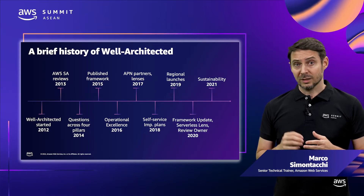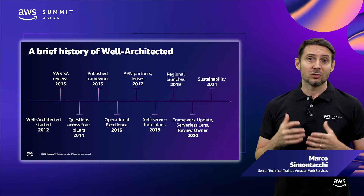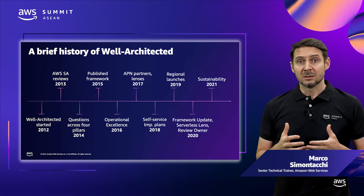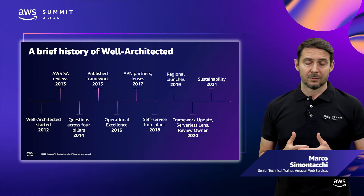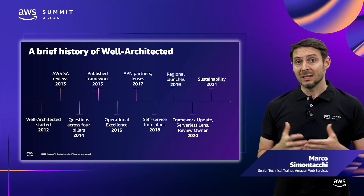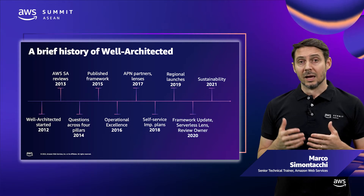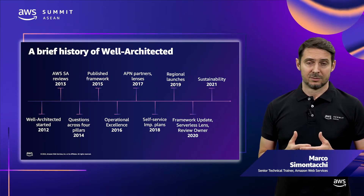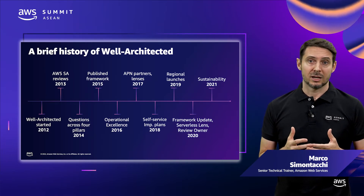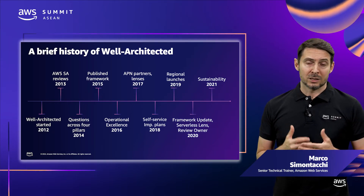AWS focused on four themes: removing perceived repetition, adding content areas to explicitly call out previously implied best practices, and revising best practices to provide clarity. These changes are intended to make it easier for you to understand and implement the best practices in your workloads. In the same year, AWS also announced the Serverless Lens, which added a set of additional questions that help customers understand how to design, deploy, and architect serverless apps following the Framework best practices.